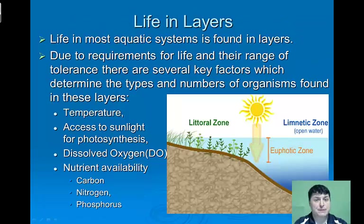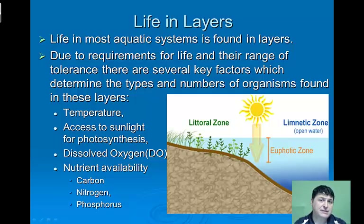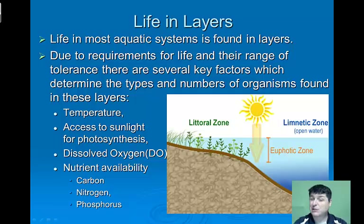Life in most aquatic systems will be found in layers. Due to requirements for life and their range of tolerance, there are several key factors which determine the types and numbers of organisms found in these layers, including temperature, access to sunlight for photosynthesis, the amount of dissolved oxygen available for respiration, and the overall nutrient availability.